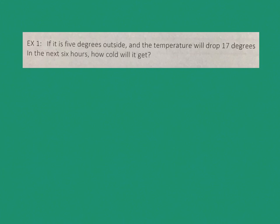Example one: if it's five degrees outside and the temperature will drop 17 degrees in the next six hours, how cold will it get? We need to identify the numbers and if they're positive or negative. The first number says it's five degrees outside — that's just going to be a positive 5. Then the next one says the temperature is going to drop 17 degrees.